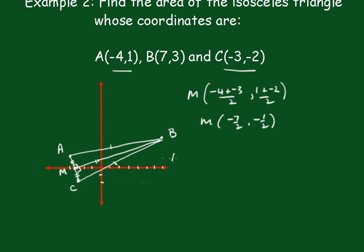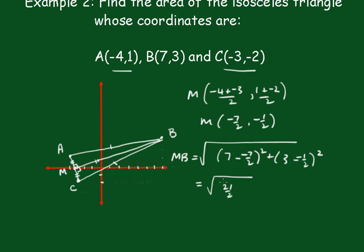Now we're using the distance formula. MB is equal to the square root of (7 + 7/2)² plus (3 + 1/2)², which gives me the square root of 490/4, and simplifying that you get 7√10/2 as the distance MB, the height of this triangle.